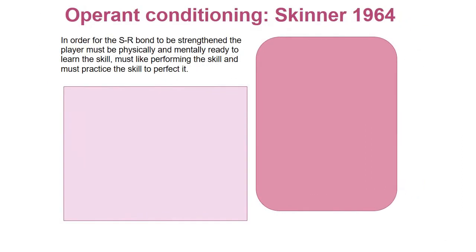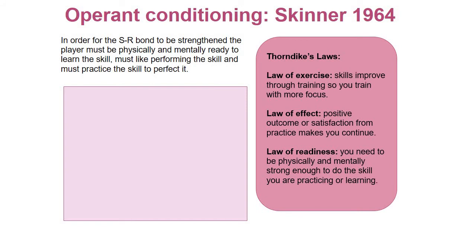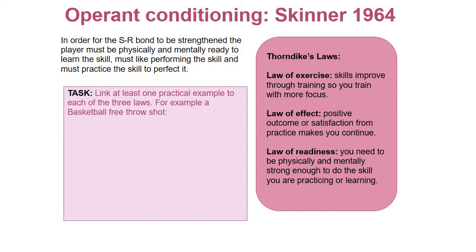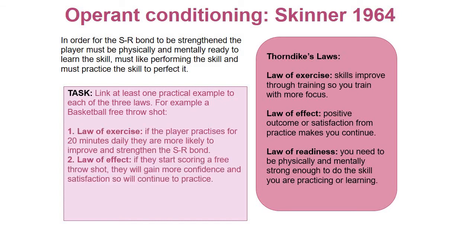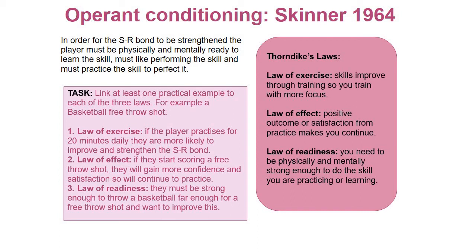For the SR bond to be strengthened, the player must be physically and mentally ready to learn the skill, must like performing the skill, and must practice the skill to perfect it. Thorndike's laws come into play here: the law of exercise - if the player practices for 20 minutes daily, they are more likely to improve and strengthen the SR bond; the law of effect - if they start scoring a free throw shot, they will gain more confidence and satisfaction; and the law of readiness - they must be physically strong enough and want to improve.